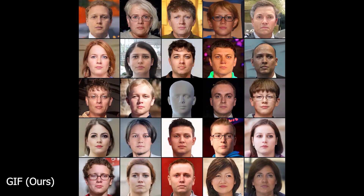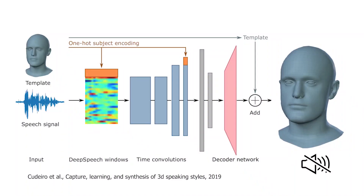Given a sequence of FLAME parameters, we can generate an animated video sequence. Despite training GIF on static images only, without enforcing any temporal consistency, it is able to generate relatively stable animation. Here we leverage a speech-to-face animation method named VOCA. Since GIF and VOCA both use FLAME, they are easily combined to generate animated faces from audio.